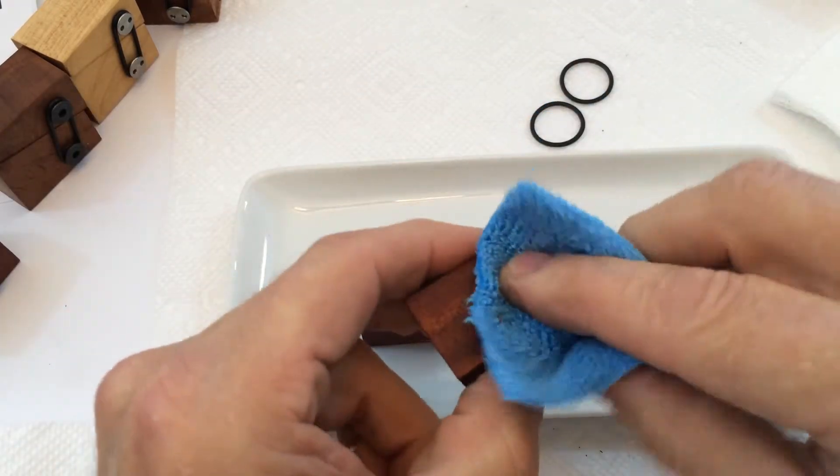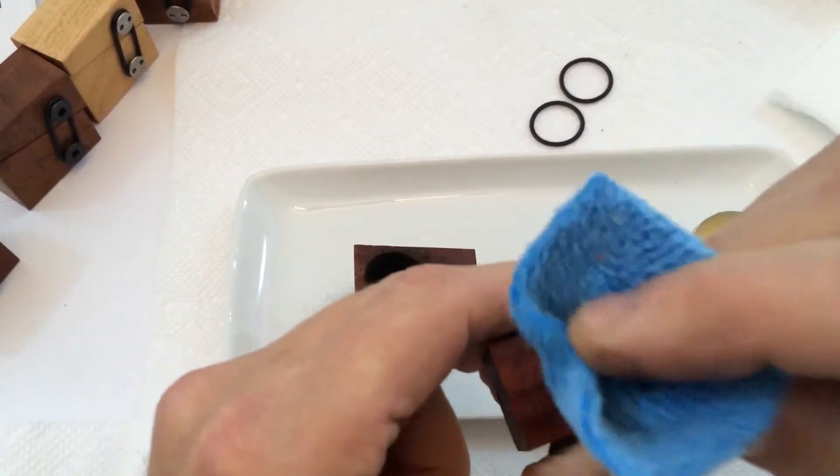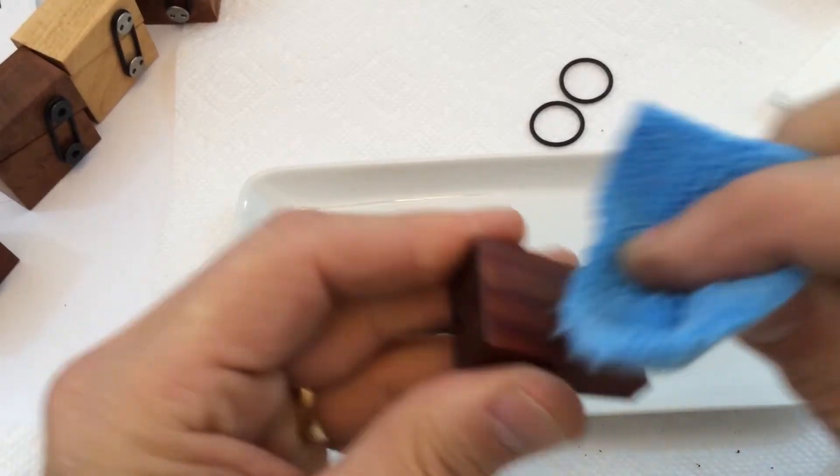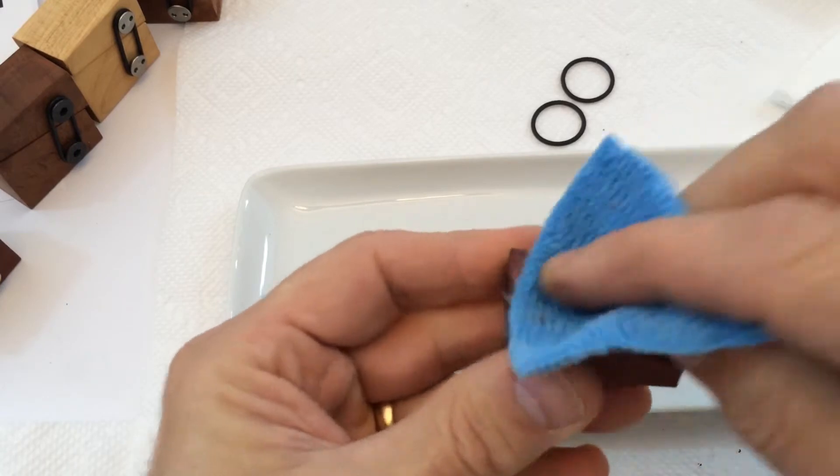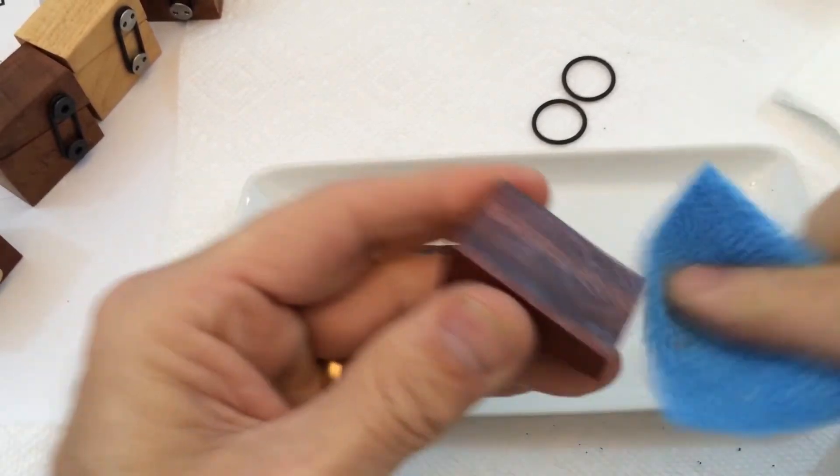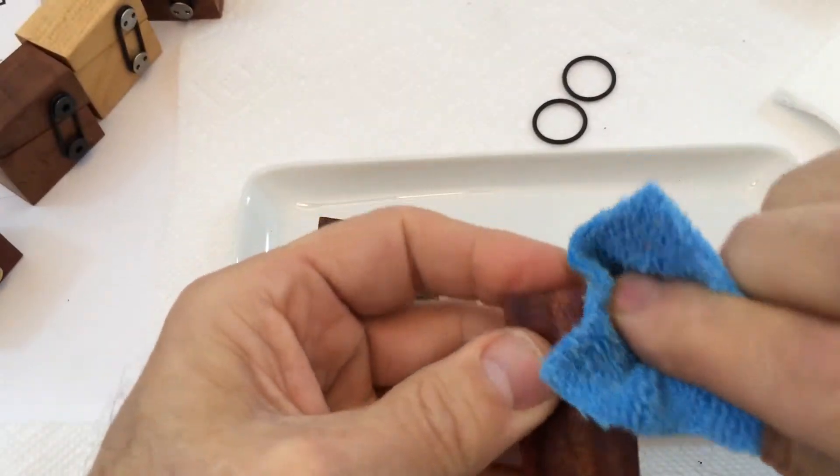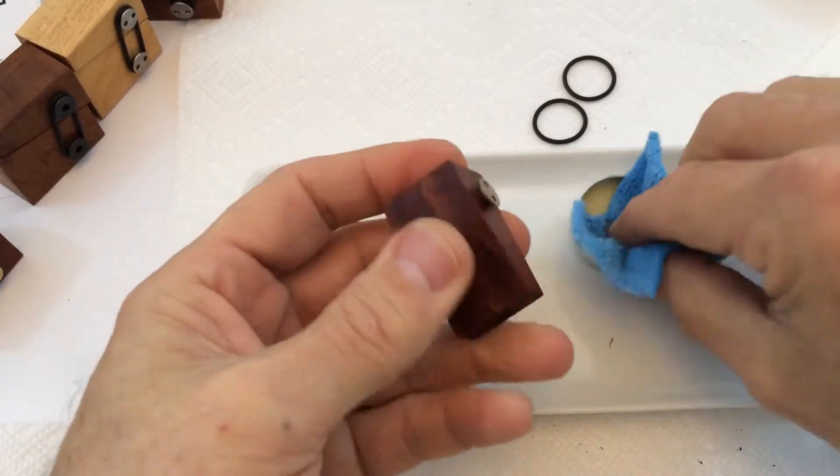I'm going to take this and rub that beeswax into it. The more you do it, the better your pipe will look. And you just rub it in. I'm going to do this a long time. If you get a little on there, don't worry it rubs right off. Put a little on the hardware.